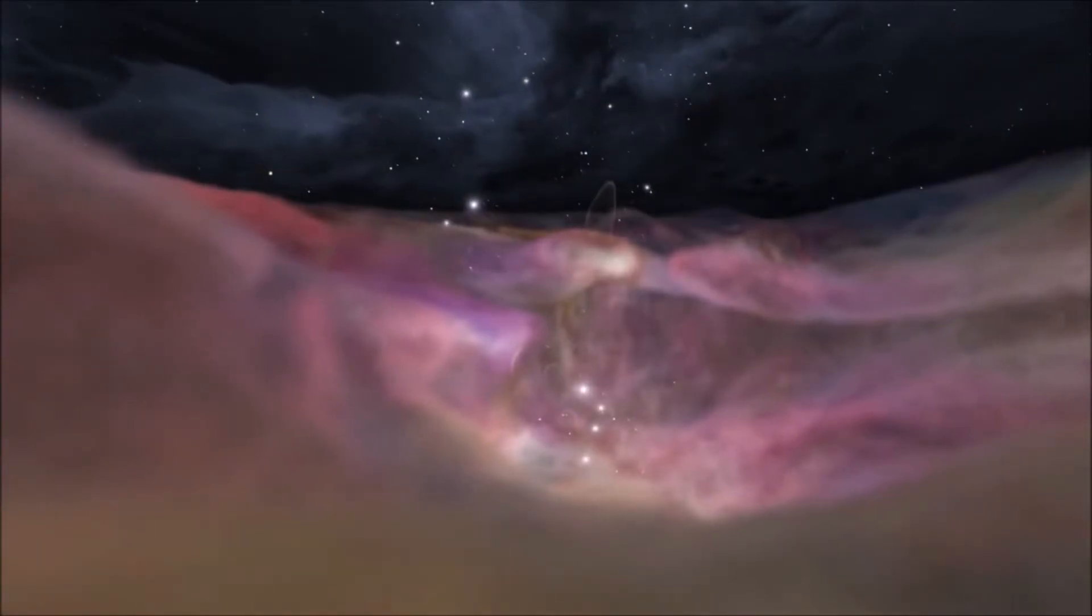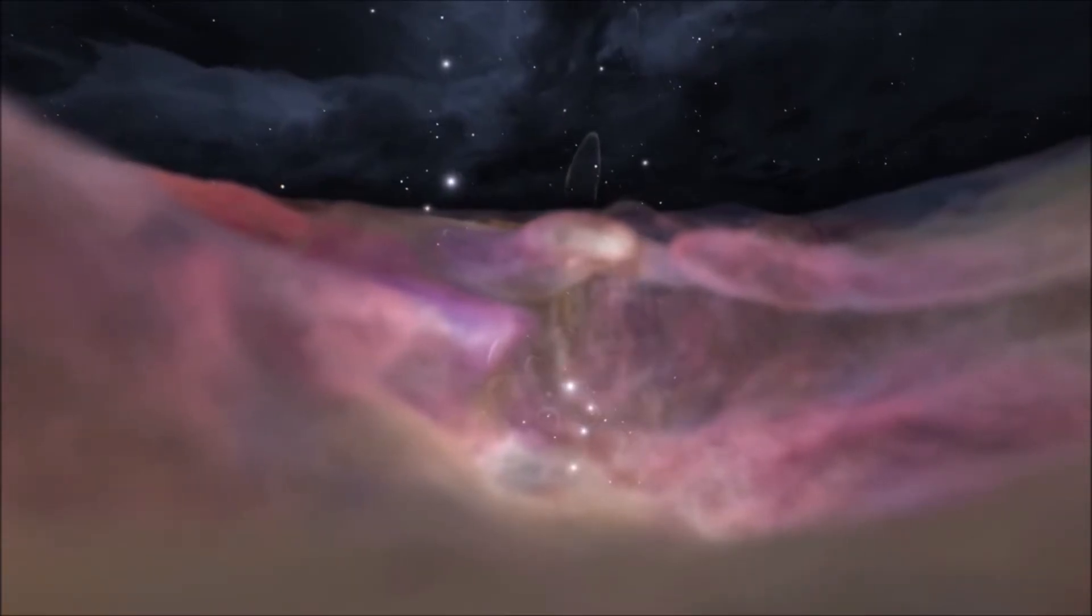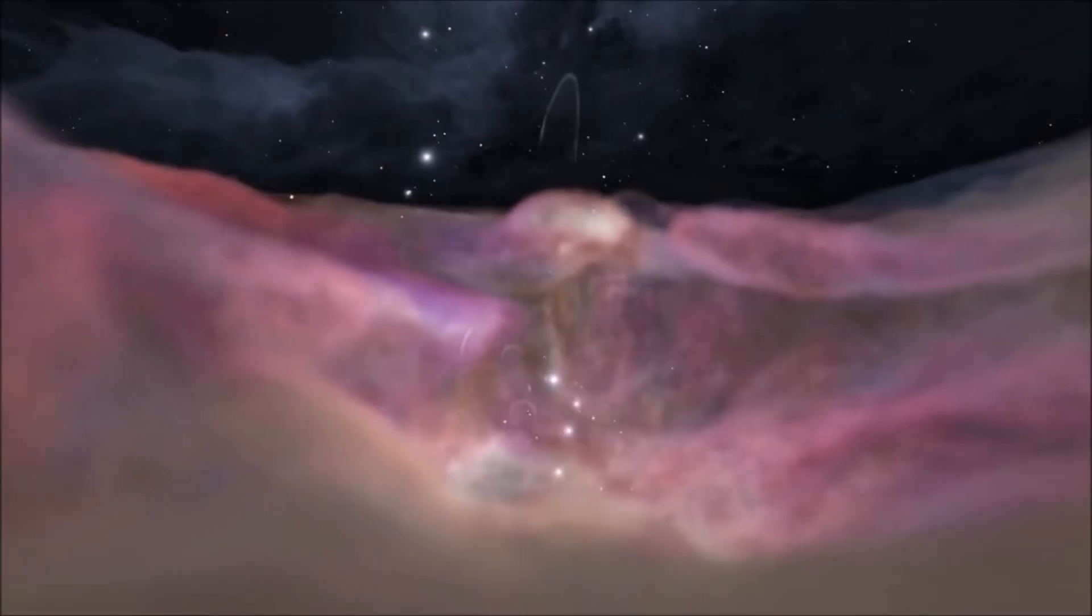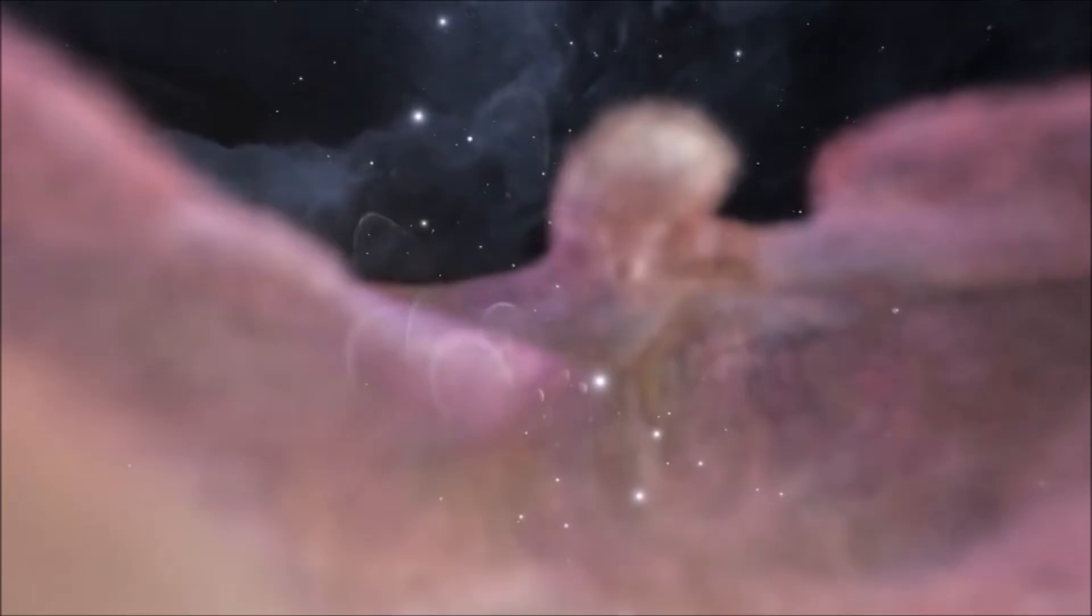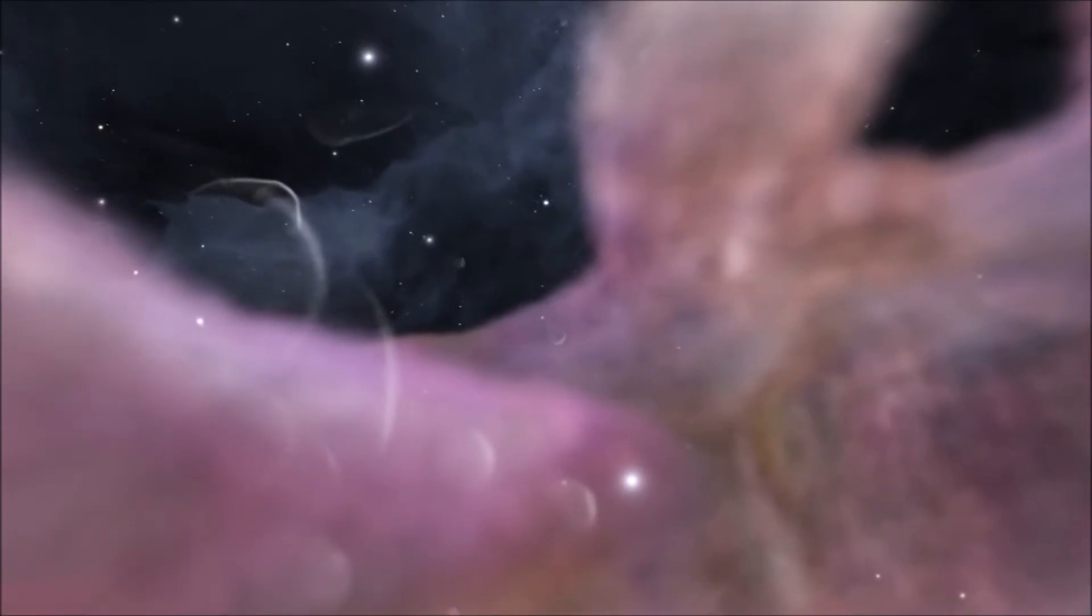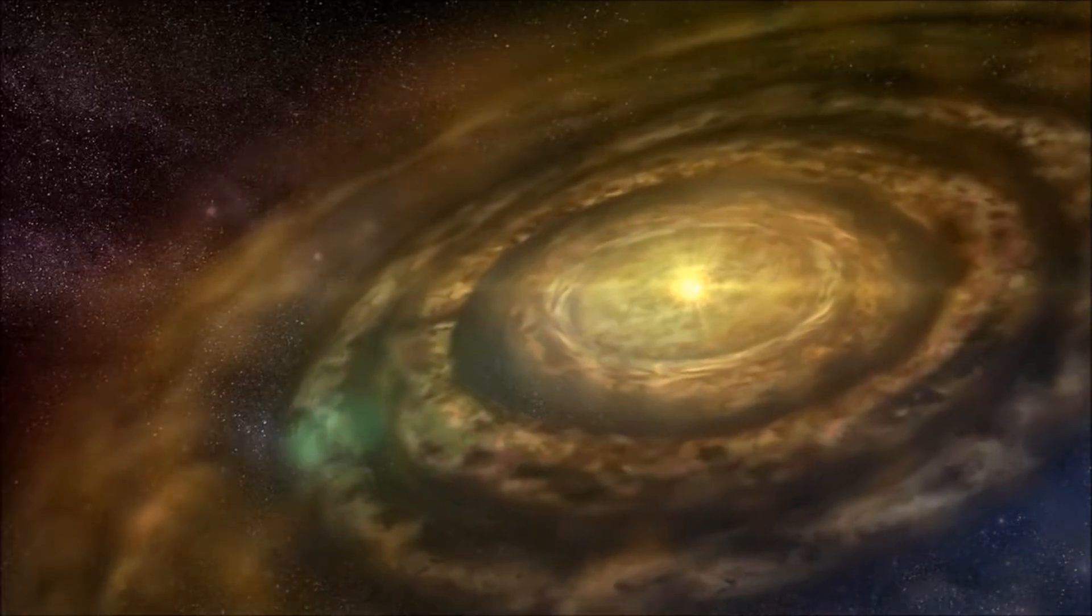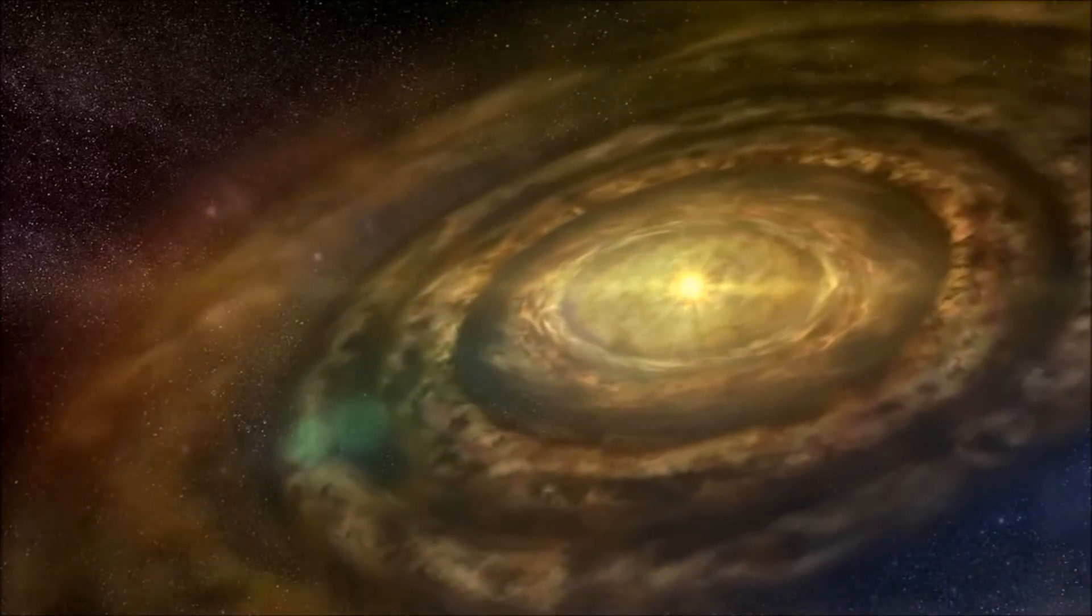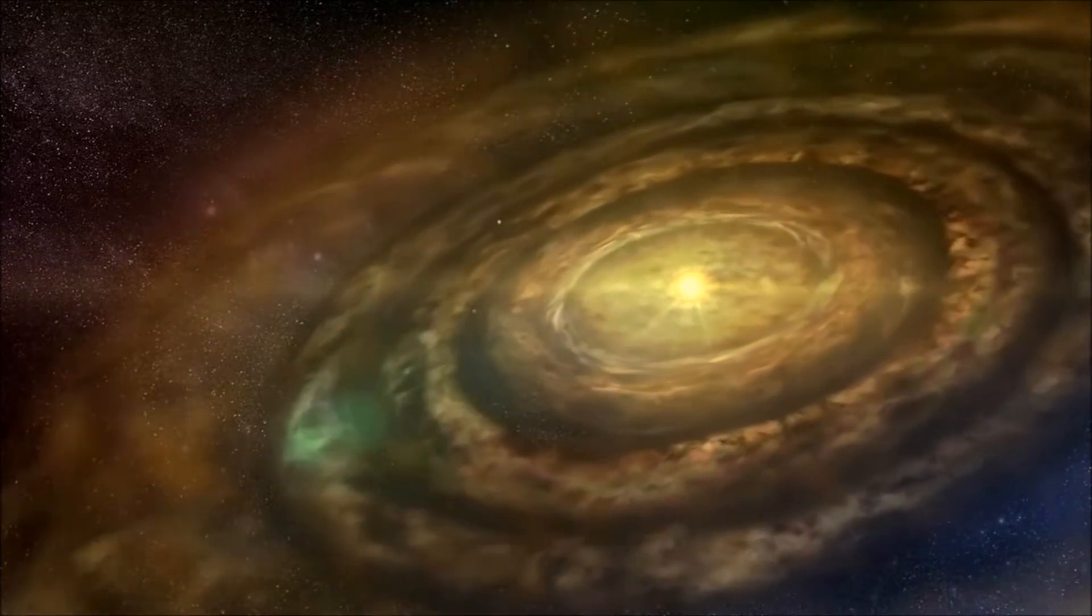This nebula gets its glow from something called the Trapezium, a cluster of four stars, each thousands of times brighter than our sun. Their energy has cleared a space in the gases around them. You can see that other stars are being born inside the nebula too. These ovals are blankets of dust surrounding newborn stars. The rings inside are probably new planetary systems being formed around these stars.